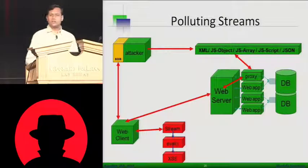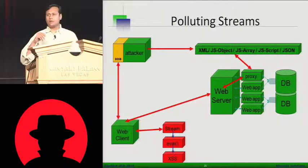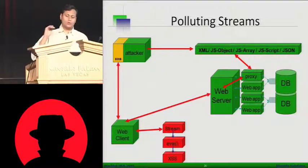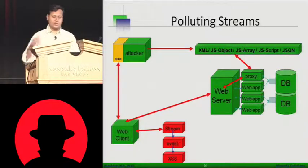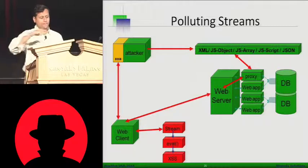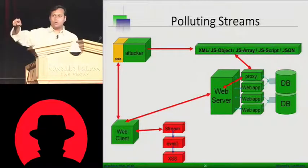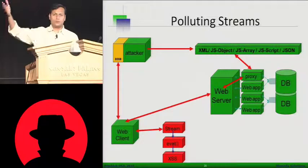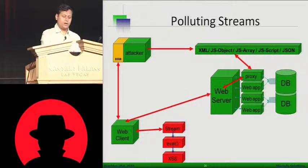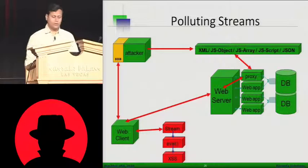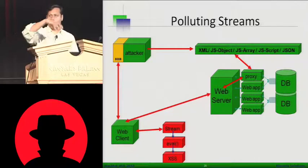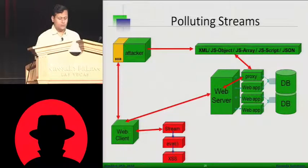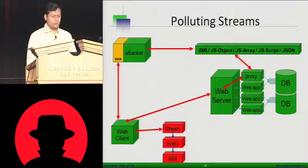You can pollute these different streams. Once an attacker finds a point where this kind of pollution is possible, they can post XML, JS object, JS array, JS script, JSON, etc. The web client makes a call to the Web 2.0 application, which invokes a proxy because it can't bypass SOP — the web client can't directly call the stream. The proxy grabs that stream, tunnels it into the web client, which does a stream-in, eval, and then gets cross-site scripted.